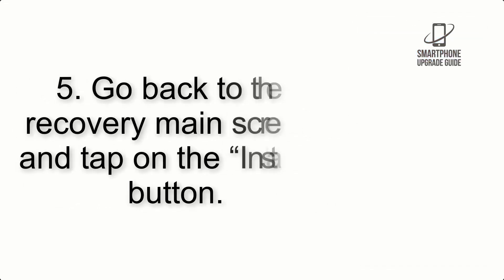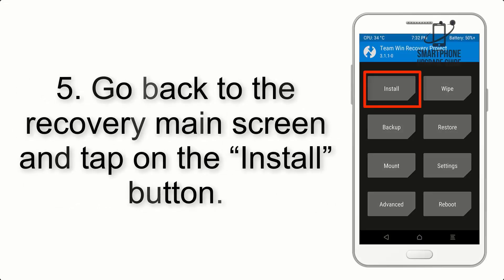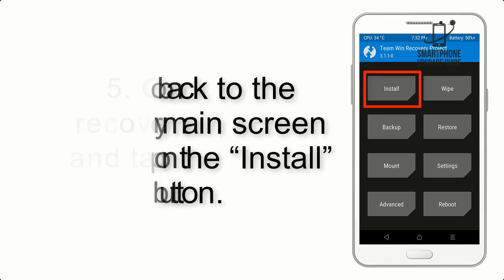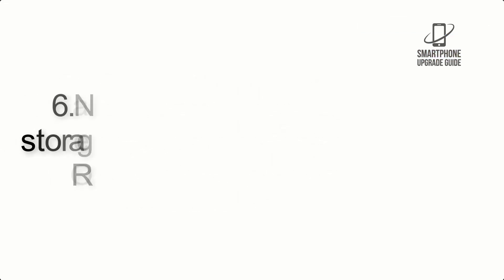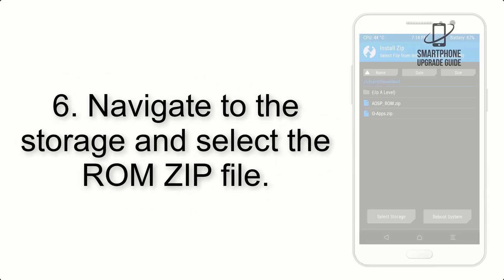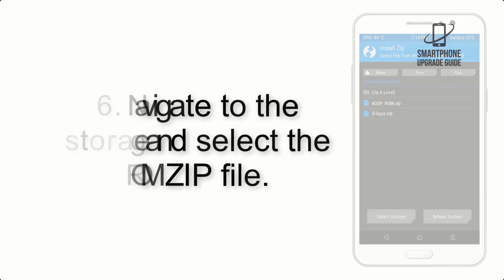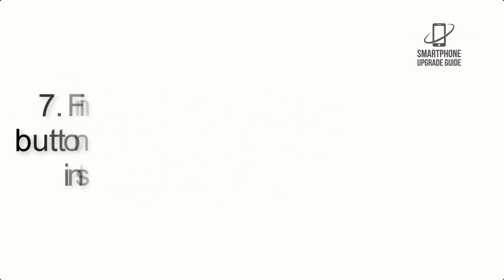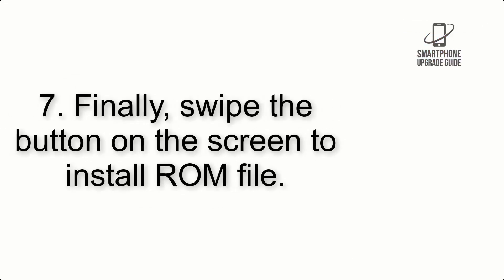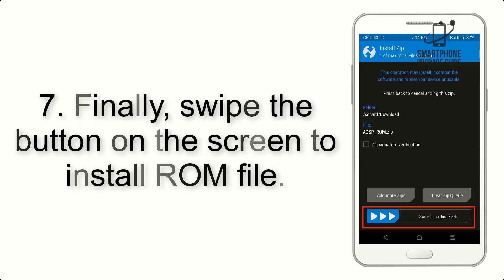Step 5: Go back to the recovery main screen and tap on the Install button. Step 6: Navigate to the storage and select the ROM zip file. Step 7: Finally, swipe the button on the screen to install the ROM file.